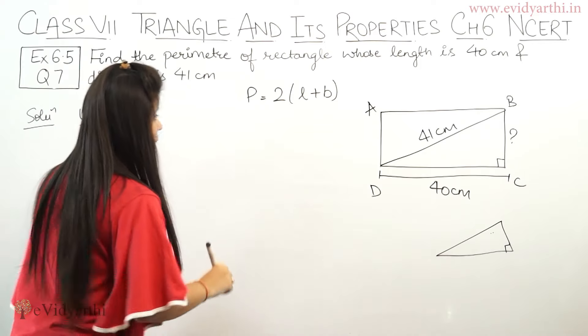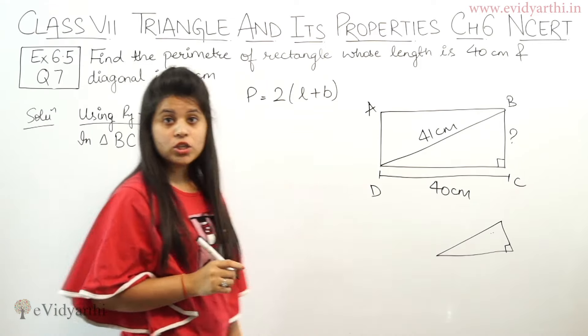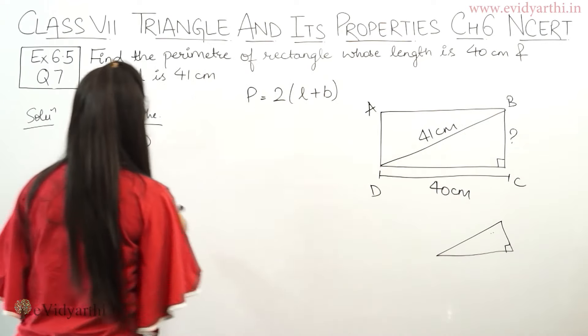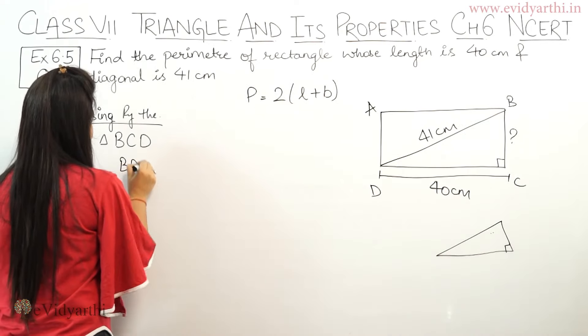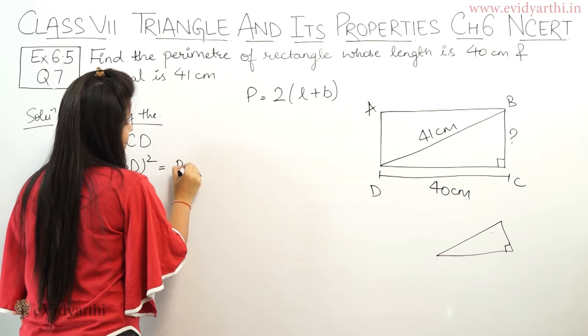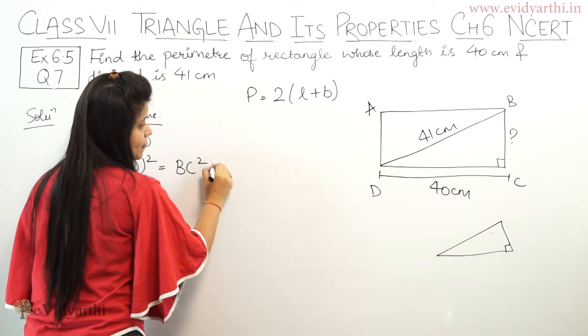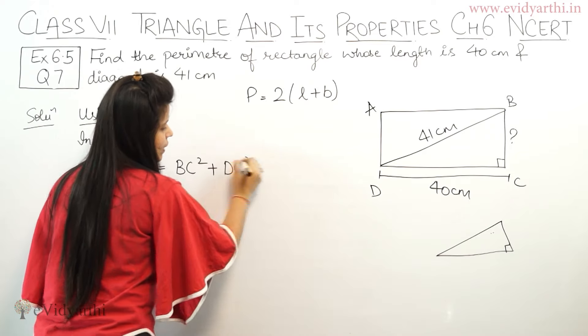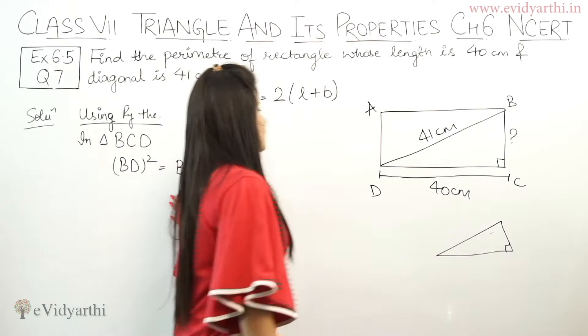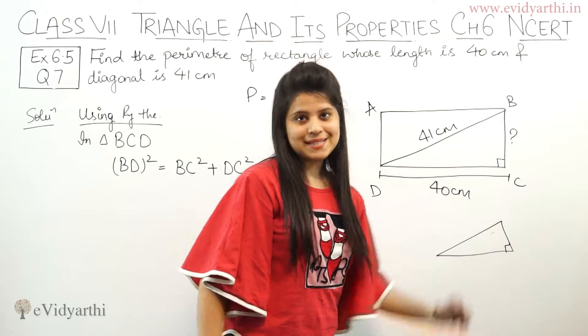In triangle BCD, if we apply Pythagoras theorem in a right triangle, then hypotenuse BD squared equals BC squared plus DC squared. Right? Now if we apply Pythagoras theorem, hypotenuse squared equals the square of one side plus the square of the other side.